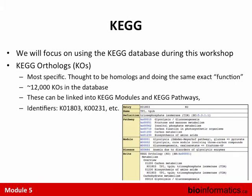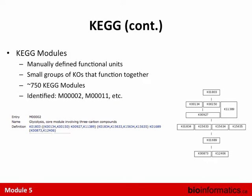KEGG orthologs are the most specific — the smallest unit at the bottom. Modules are bigger, subsets of KEGG orthologs. Pathways are even bigger. A KEGG ortholog is essentially like a specific gene name. You can group these KOs into KEGG modules — mainly defined functional units, small groups of KOs that function together. There are about 750 KEGG modules, labeled with a capital M.